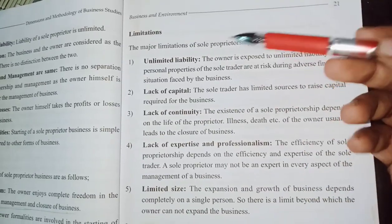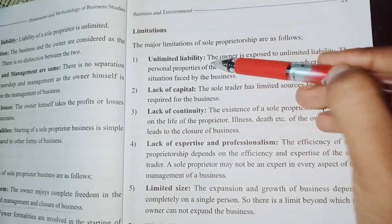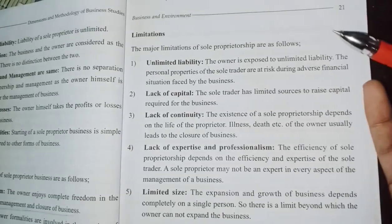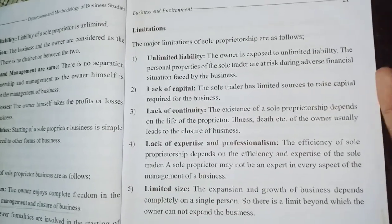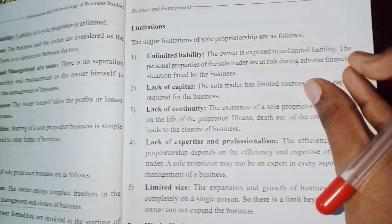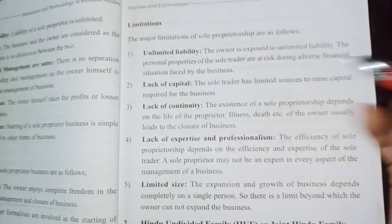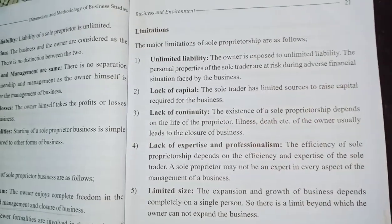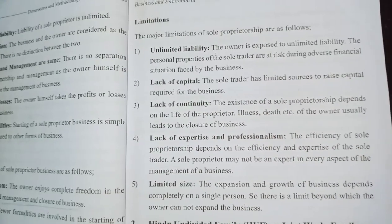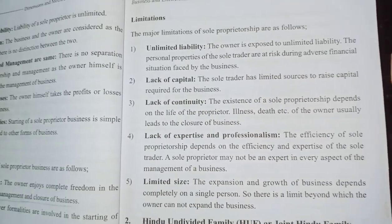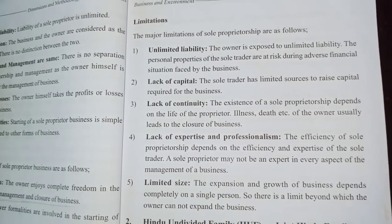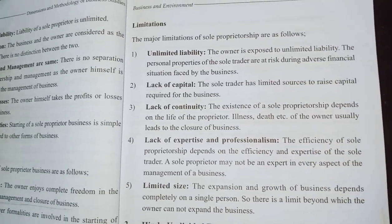Next is Limitations. Unlimited liability is a limitation of sole proprietorship — the owner bears the full amount of debt and risk. Lack of capital is another limitation: the sole proprietor has limited sources to raise capital required for the business. You will not have a partner, so capital sources are limited to family or bank.